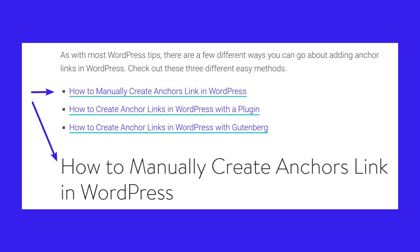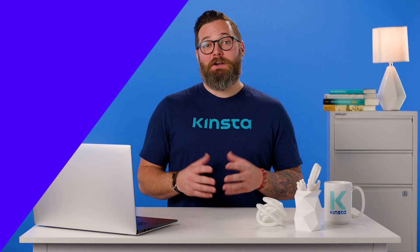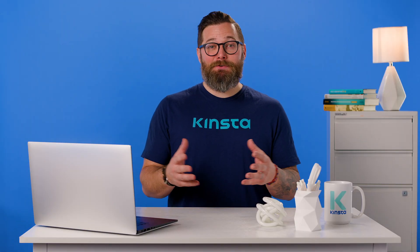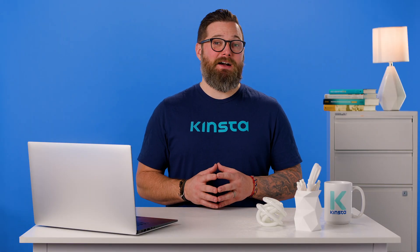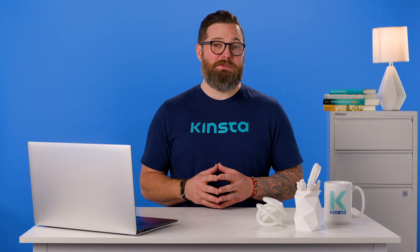If you're still a little confused on what anchor links are, don't worry — here's an example. We are using anchor links on each of these bulleted list items. When you click on them, it takes you directly down to the H2 header that contains that content. Anchor links can be used on anything such as text, images, and H1 through H6 headers. On a lot of sites, anchor links are merely used to create a table of contents at the beginning of long-form posts.